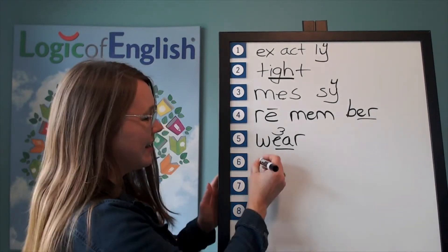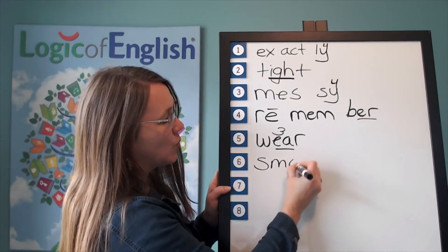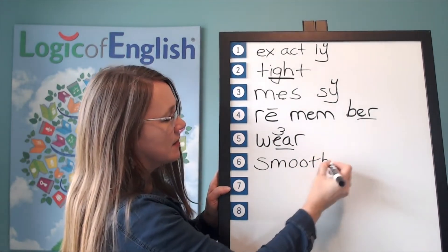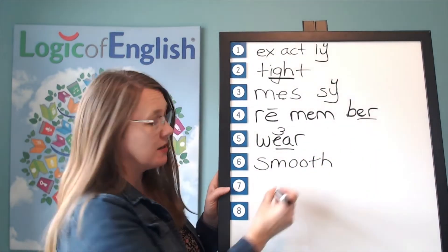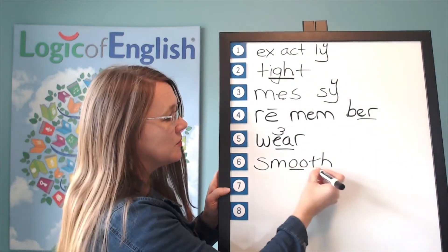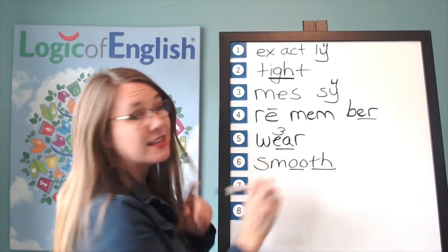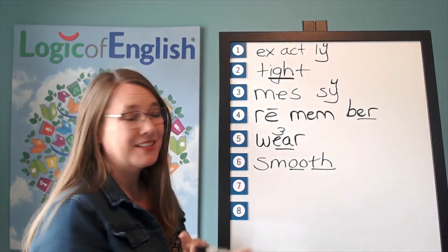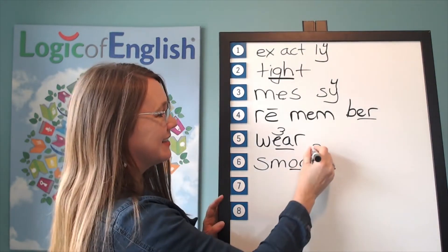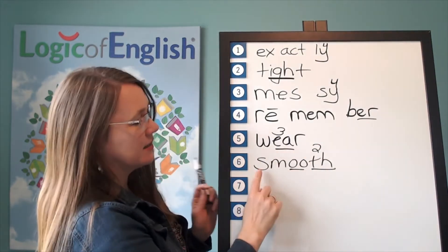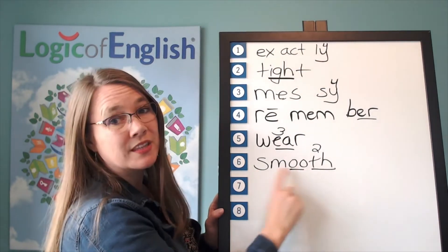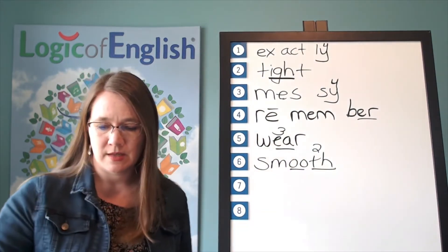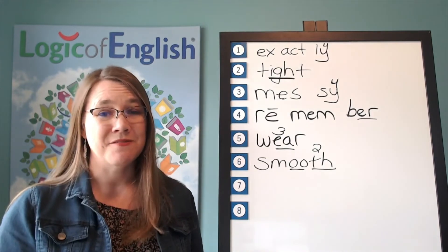Help me to write it. S, mm, OO, OO. And how will we mark it? We'll underline the OO and we'll underline the V. What sound of S-V do we hear? The second. Let's read it. Smooth.